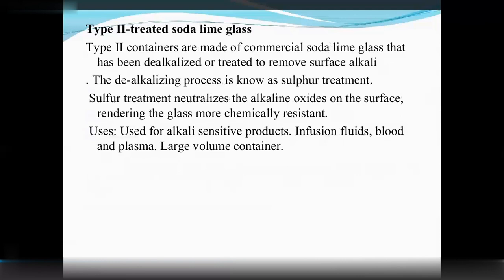Type 2 is treated soda lime glass. Type 2 containers are made of commercial soda lime glass that has been de-alkalized — sulfate alkali is removed from the surface by a sulfur treatment process. This glass is used for infusion fluids, blood, plasma, and large volume containers.